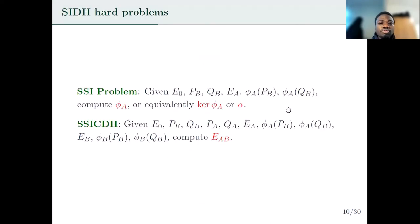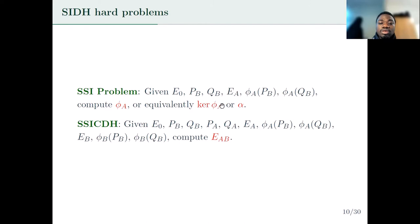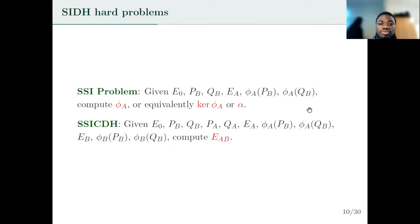The key recovery problem is the problem of computing an isogeny when its action on some torsion points is given. We are given E0 and E_A, the torsion points P_B, Q_B and their images through phi_A, and asked to compute phi_A or the kernel of phi_A or the integer alpha that defines it. In the computational Diffie-Hellman problem, you are given the kernels of phi_A and phi_B together with the respective torsion point images, and you are asked to compute the shared secret. We will be interested in the supersingular isogeny problem with torsion points in an adaptive attack setting, where you are given access to a key exchange oracle and want to recover alpha.